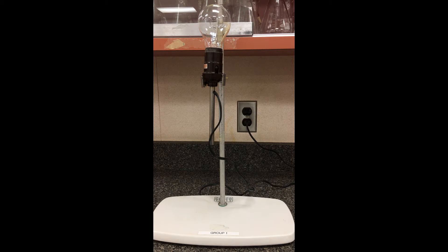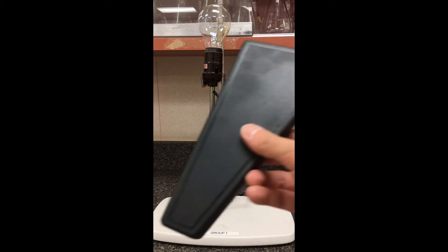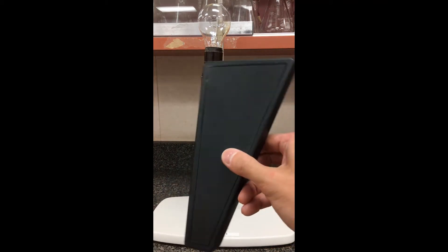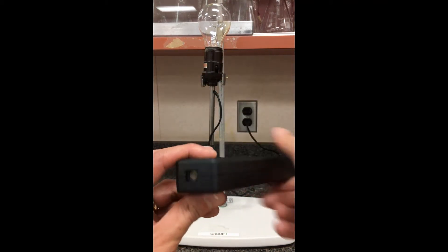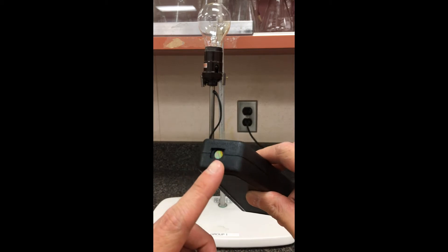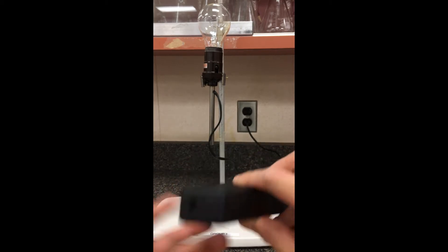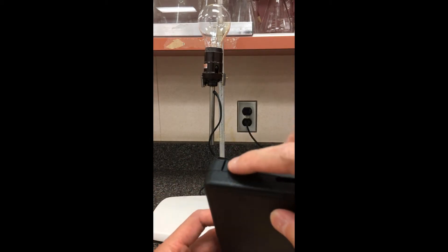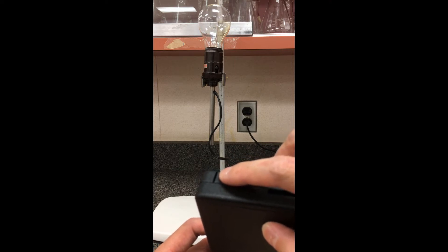We're going to be using these spectroscopes here. Notice that they're triangular in shape. You're going to be holding it from the narrow end—there's a tiny window that you can be peering through from the spectroscope. Directly across is a thin slit that we're going to point towards our light source.